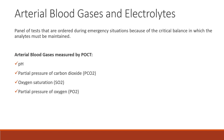The next group of tests are arterial blood gases and electrolytes. These are panels of tests ordered during emergency situations because of the critical balance in which the analytes must be maintained. The arterial blood gas parameters measured by POCT include pH, partial pressure of carbon dioxide, oxygen saturation, and partial pressure of oxygen.